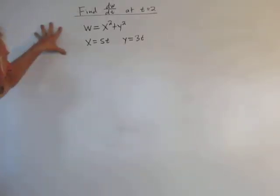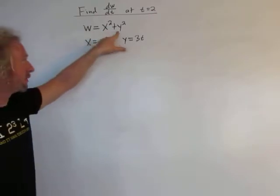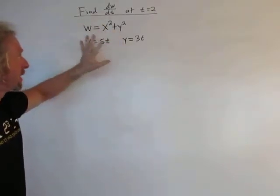Hey, everyone. So today we have a function w of two variables, and we're going to find the derivative with respect to t.